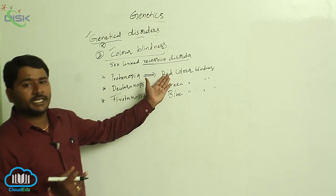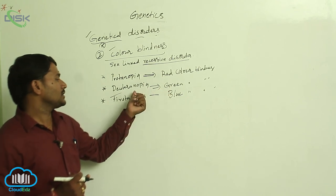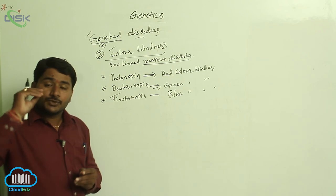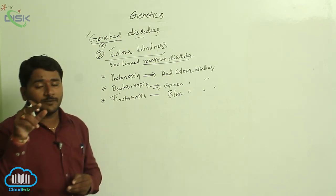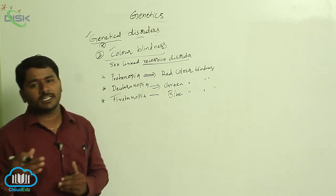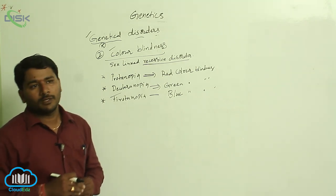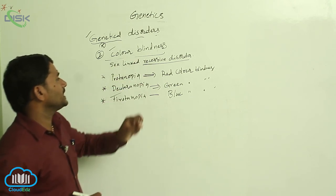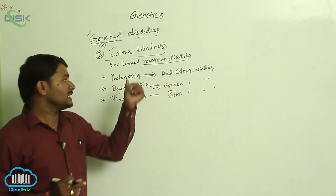People not able to identify red color are known as Protanopia; green color, Deuteranopia; blue color, Tritanopia. Some genes are responsible for the three types of cones in human beings — cones for red, green, and blue. When these cones are absent due to recessive alleles, those people cannot identify the difference among these three colors. This is called color blindness.